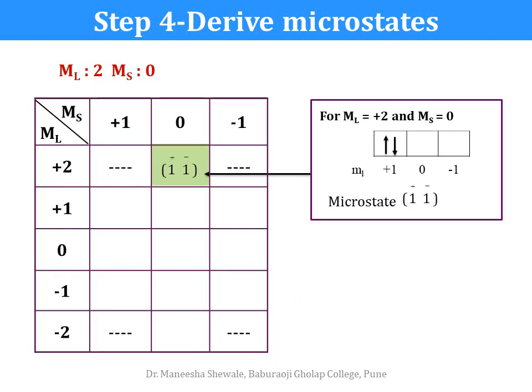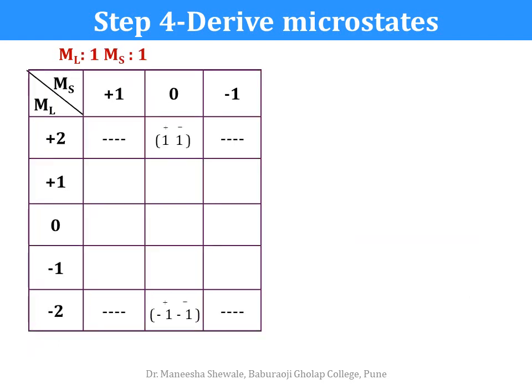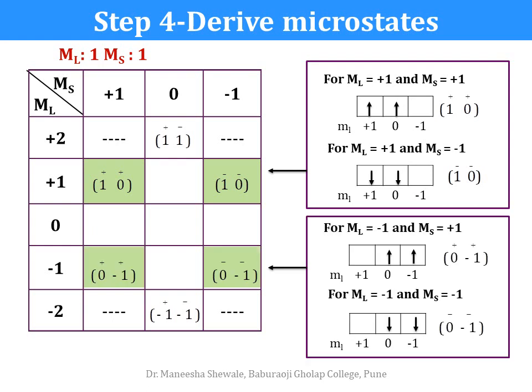For ML = plus 2 and MS = 0, the microstate will be (1+, 1−). For ML = minus 2 and MS = 0, the microstate will be (−1+, −1−). For ML = plus 1 and MS = plus 1, the microstate will be (1+, 0+). For ML = minus 1 and MS = plus 1, the microstate will be (0+, −1+), and for MS = minus 1 it will be (0−, −1−).